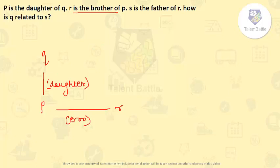Now P is daughter of Q and R is brother of P. So directly we can say that R is son of Q.